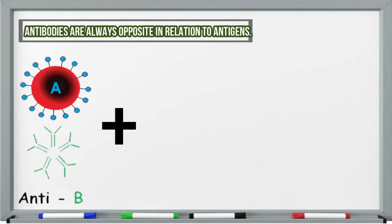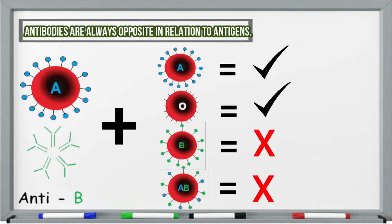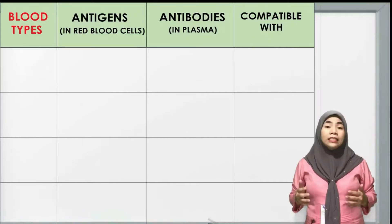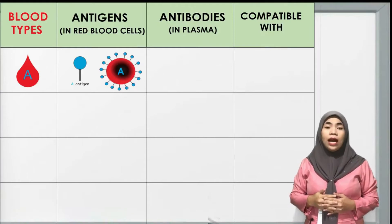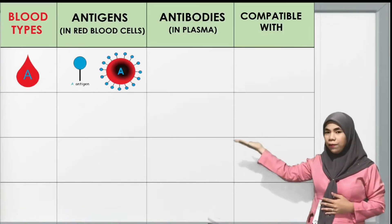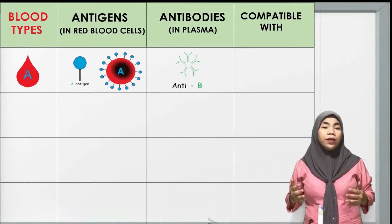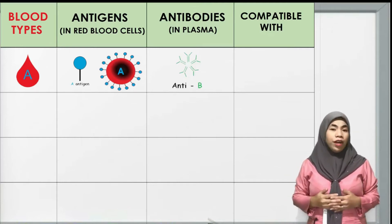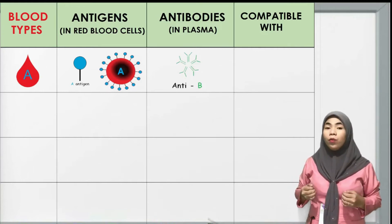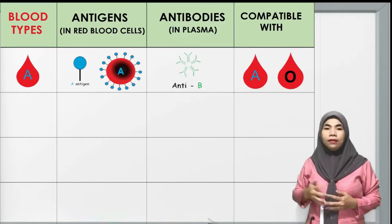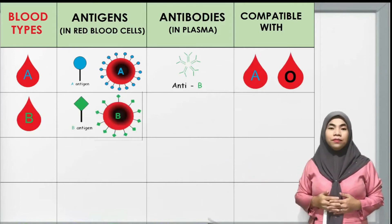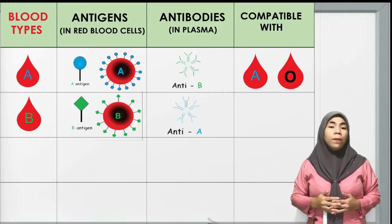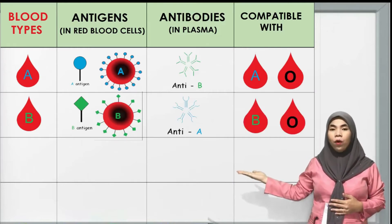Therefore, a blood type A person can only receive blood type A and blood type O. For blood type A, they will have A antigens and anti-B antibodies, meaning anti-B will attack B antigens. So blood type A is compatible with type A and type O only. For blood type B, they will have B antigens, anti-A antibodies, and is compatible with type B and type O only.